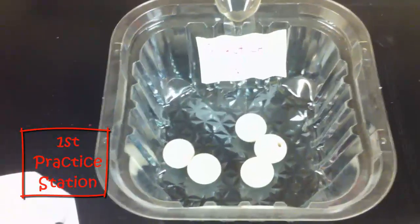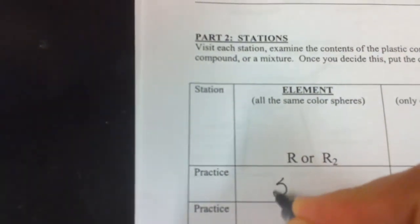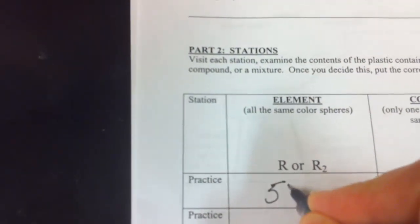Now, the first thing we need to do after we see what's in there is decide, is it an element, compound, or mixture? Those are all the same, and they're all individual, so we're going to write 5W, because there's five of them.